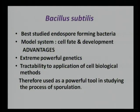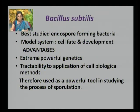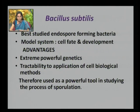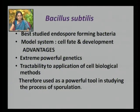Let us now see the process of sporulation in Bacillus subtilis. It is the best studied endospore-forming bacteria as far as its biochemistry, genetics, and physiology are concerned. It has been used as a model system for studying cell fate and development for decades, owing to its extremely powerful genetics and tractability to cell biological methods. It is therefore used as a powerful system for studying the basic mechanism of sporulation.